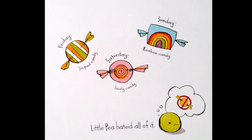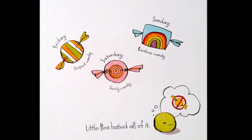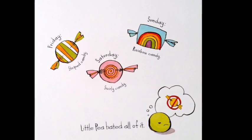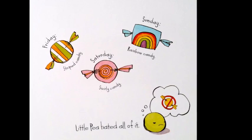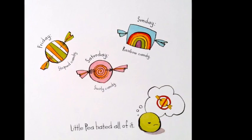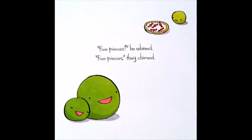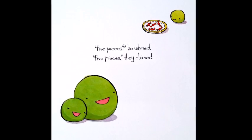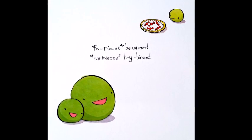Little P hated all of it. If you want to grow up to be a big, strong pea, you have to eat your candy, Papa P would say. If you don't finish your candy, then you can have dessert, Mama P would say.